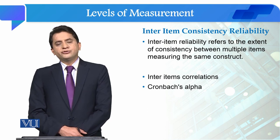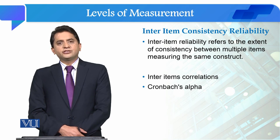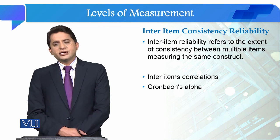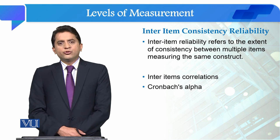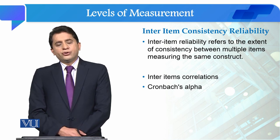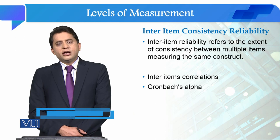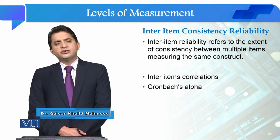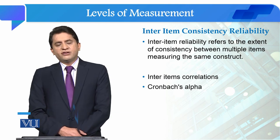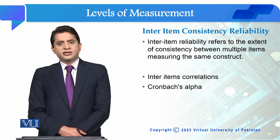تو اس کو check کرنے کے لیے دو methods ہیں۔ ایک یہ ہے کہ آپ جو ایک construct کے لیے scale بنایا ہے — for instance fear of coronavirus کو measure کرنے کے لیے ایک scale ہے FCV19S، اس کی 7 items ہیں — تو ان 7 items کے inter-item correlations check کر لیں۔ جتنا correlations significant اور high ہوگا، یعنی value 0.5 سے above ہوگی، تو ہم یہ کہہ سکتے ہیں کہ inter-item consistency reliability بہتر ہے۔ اور اسی طرح ایک اور measure ہے جو ہے Cronbach's alpha، اور Cronbach's alpha کے بارے میں ہم next module میں detail سے بات کریں گے۔